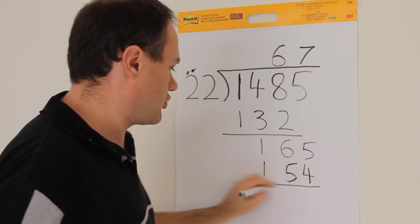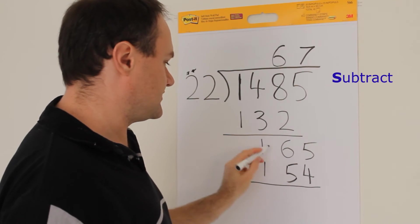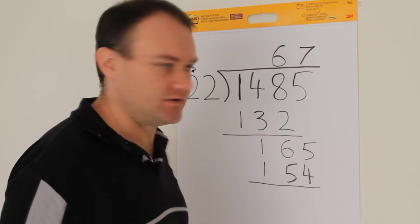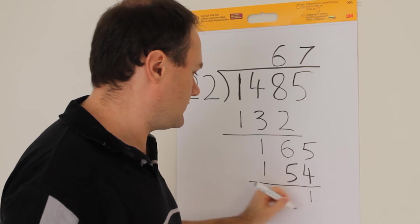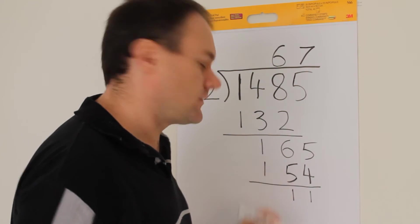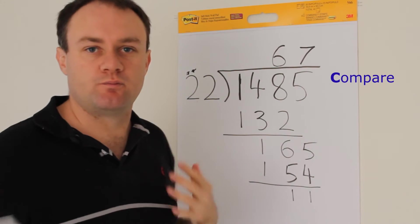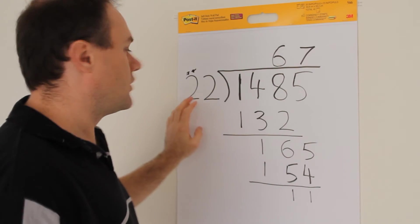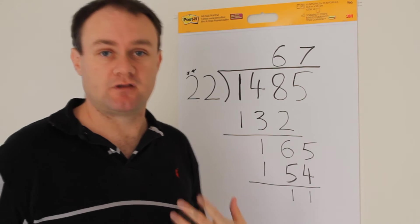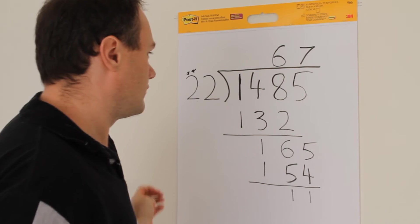Straight along to subtraction. 165 minus 154. 5 minus 4 is 1. 6 minus 5 is 1. 11. Now we compare. And beautiful, the 11 compares very favorably with the 22 in that it is lower than it. So we know that we've done the right thing.